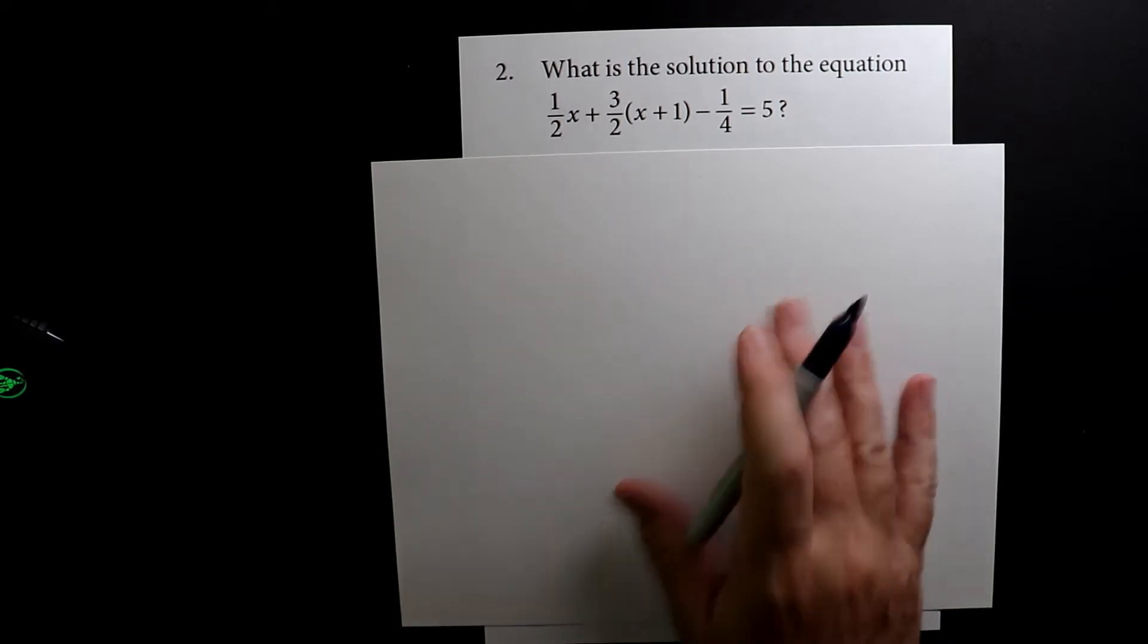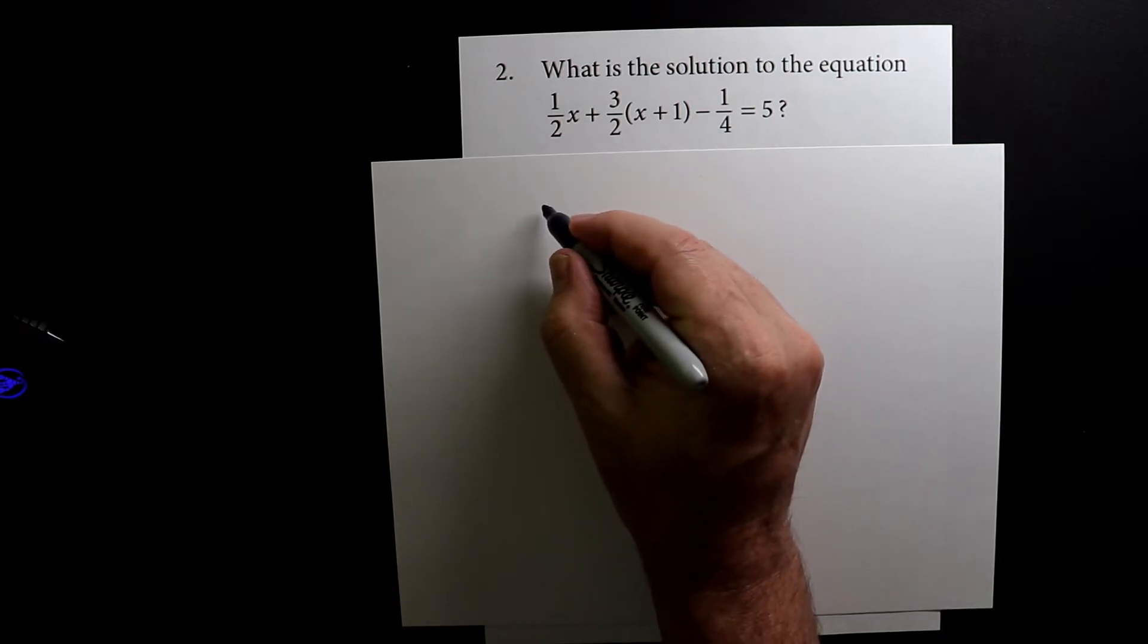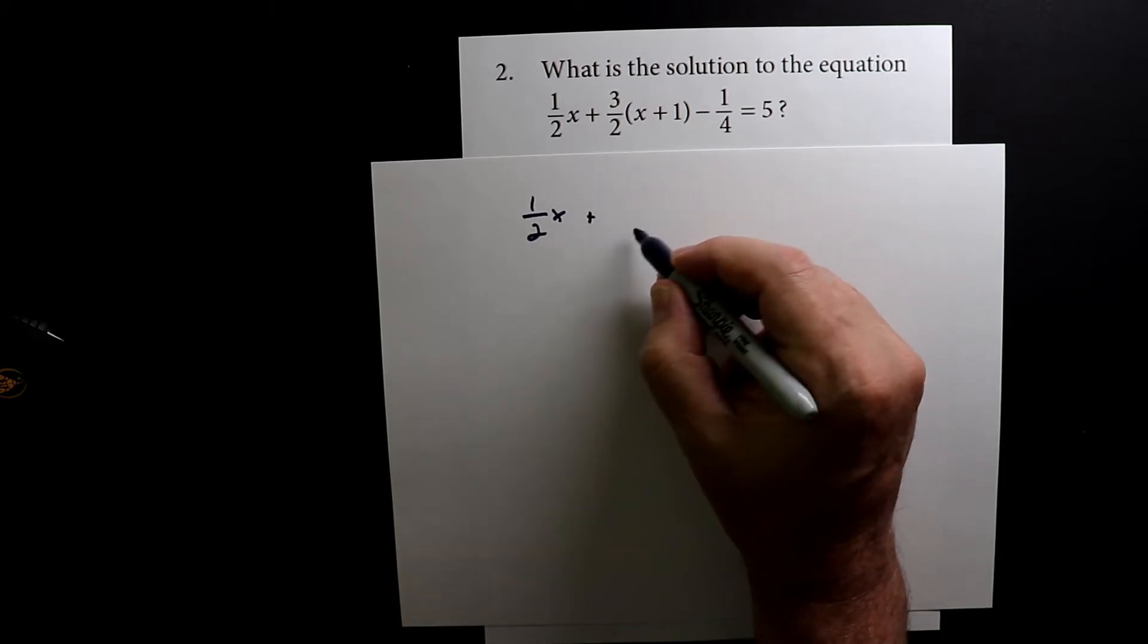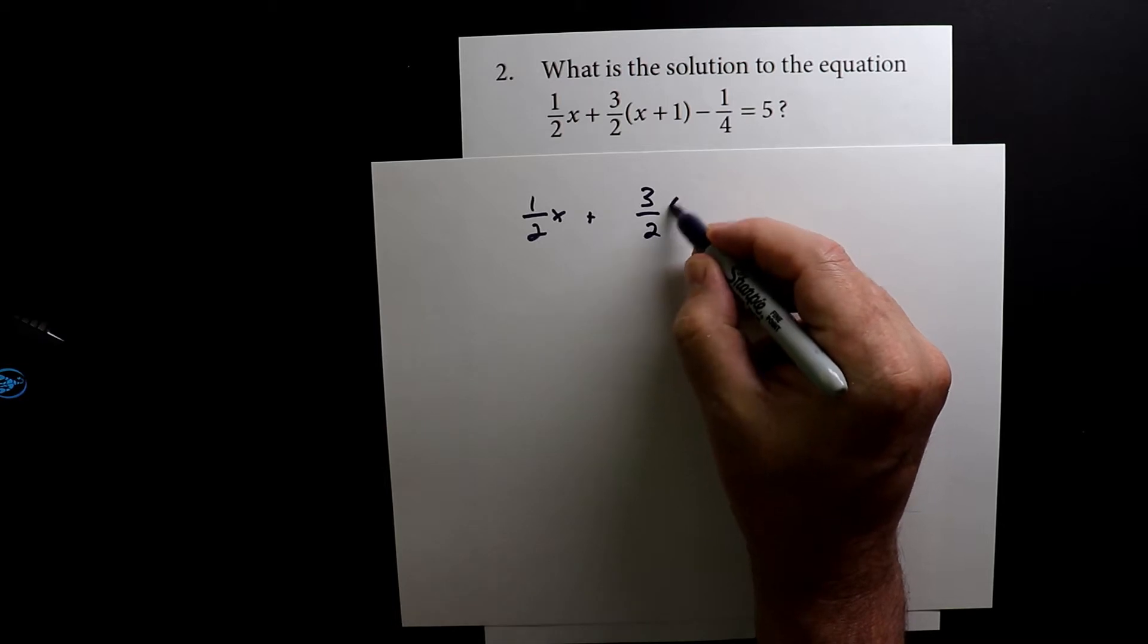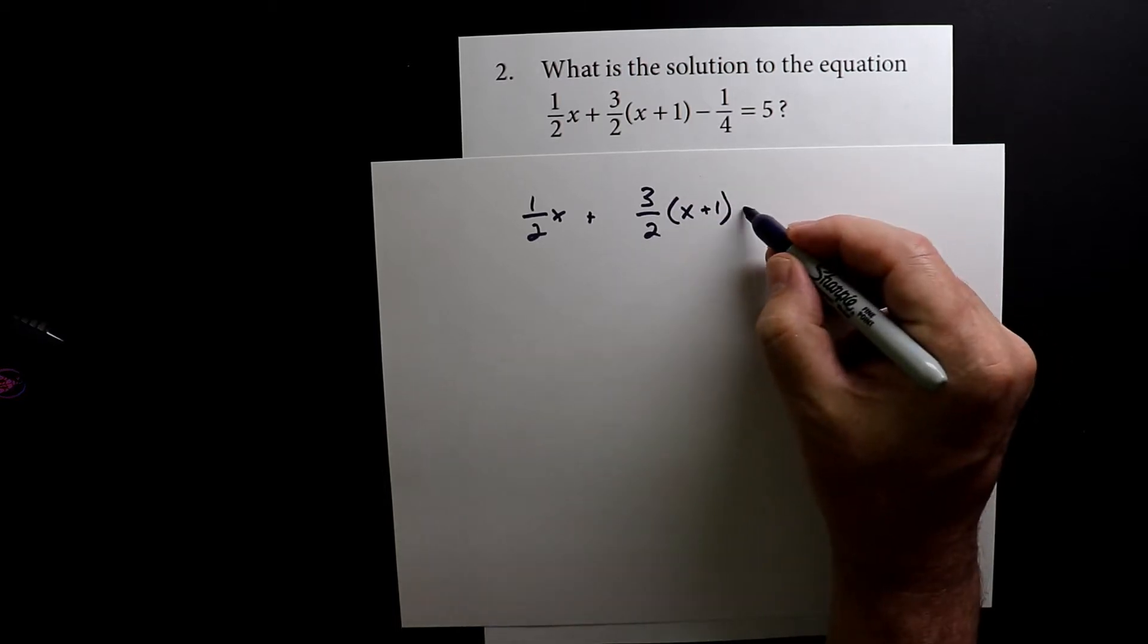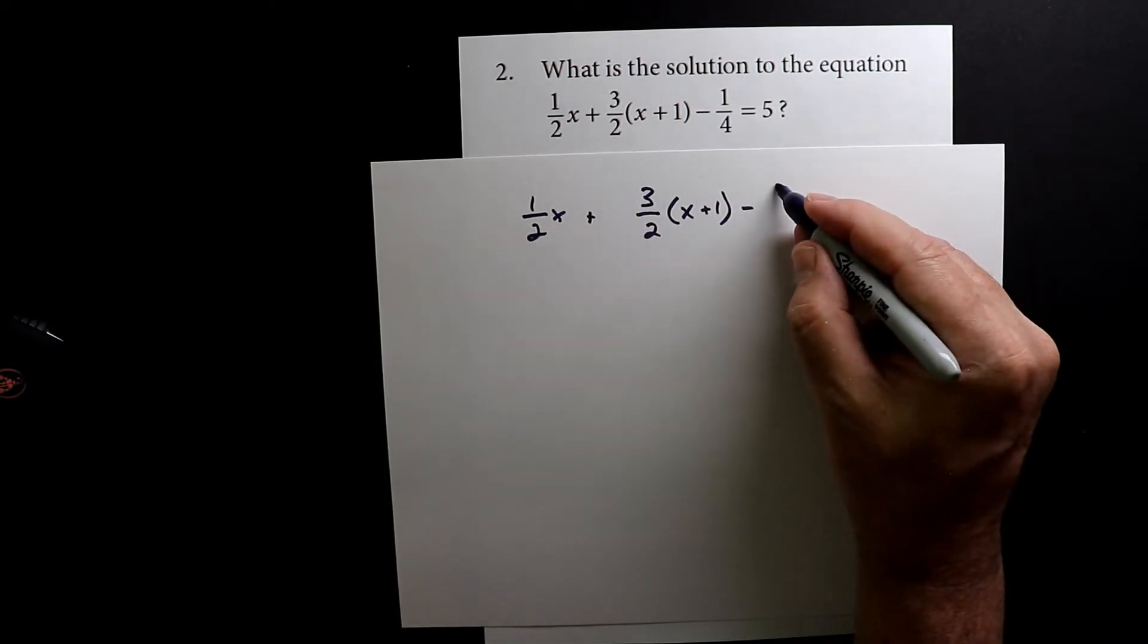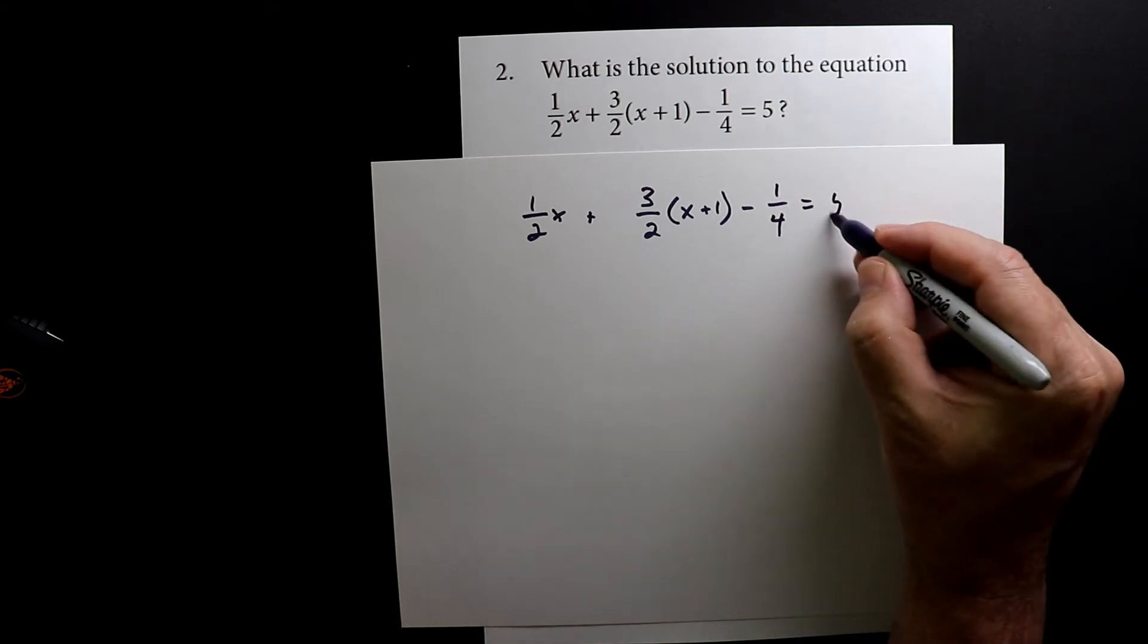So let's rewrite this equation. I'm going to spread it out a little bit so I can make some changes to it. So I'm going to leave the one over two x, put a little space, and then put three over two times x plus one. The one over four, since I want to turn these twos into a four, I don't need any extra space. So I'm just going to leave that be. And that equals five.